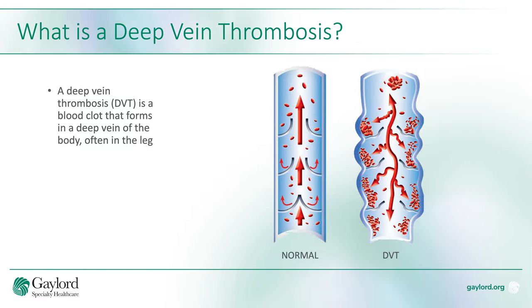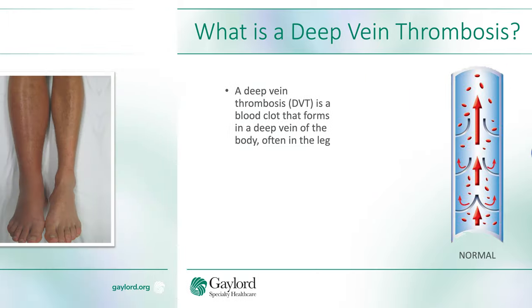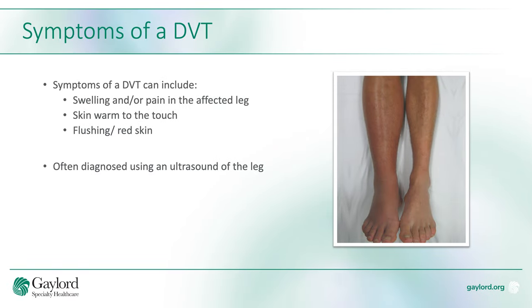A deep vein thrombosis is a blood clot that forms in one of the deep veins of the body, usually in the legs. Symptoms of a DVT can include pain or swelling in the limb that the DVT is present in, as well as skin that is warm to the touch and the skin often turns flush or red. Usually a DVT is diagnosed with the use of an ultrasound.